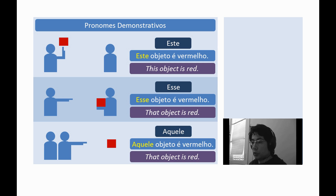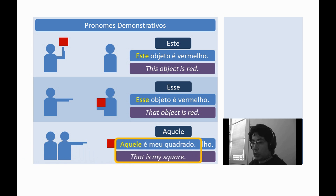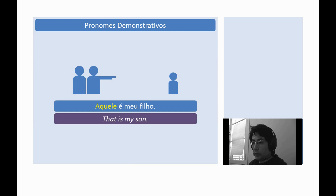Aquele — it is used to show something far from both speaker and listener. Aquele objeto é vermelho. That object is red. In the previous examples, the demonstratives worked as demonstrative adjectives, but they also can work as true pronouns. Example: Aquele é meu quadrado. That's my square. Another example: Aquele é meu filho. That's my son.